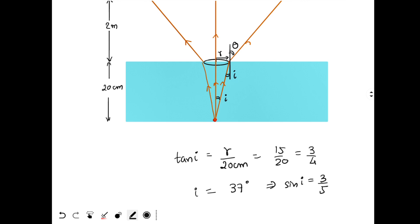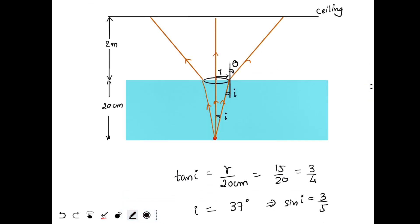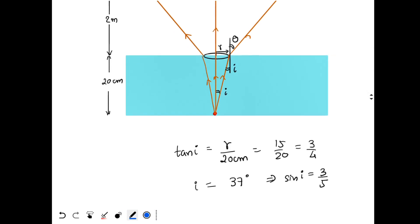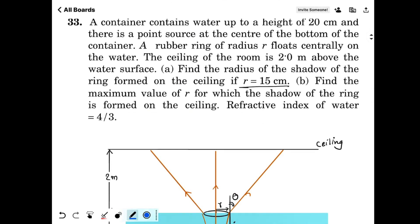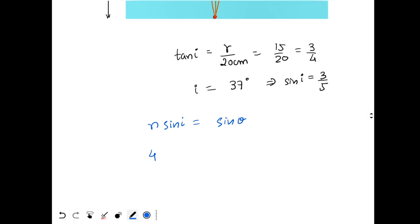Now we need to find theta angle. So for finding theta angle we apply Snell's law. So n sin I equals sin theta. Since we have water over here whose refractive index is 4 by 3. So n is 4 by 3. Sin I is 3 by 5. Equal to sin theta. So we got sin theta to be equal to 4 by 5. 3 cancels out. So theta will be 53 degrees. We found theta.